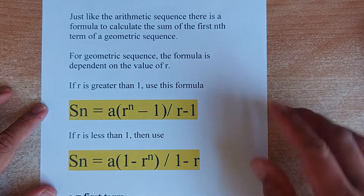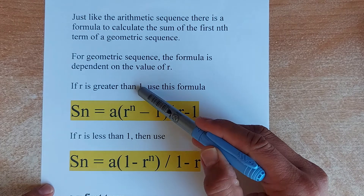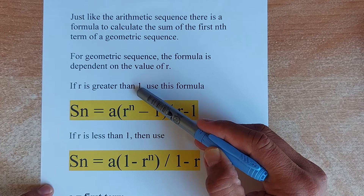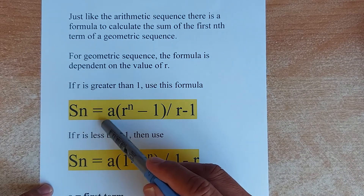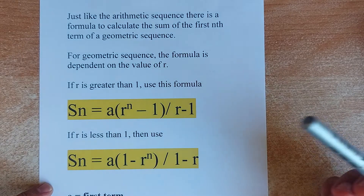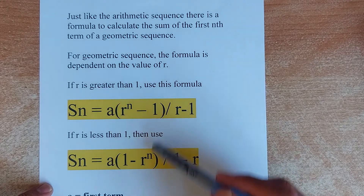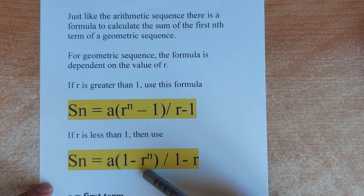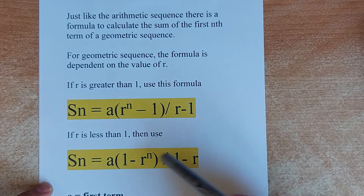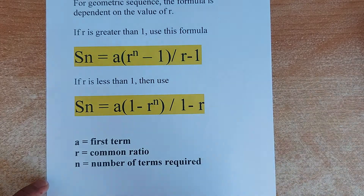Just like your AP, you have to find the sum of the first N terms. For the geometric sequence, the formula is dependent on the value of R. If R is more than 1 — for example, R is 2, 3, 4, 5, or 10 — the formula is: SN equals A times (R to the power N minus 1) divided by (R minus 1). However, if R is less than 1 — for example 0.5 or 0.9 — the formula is: SN equals A times (1 minus R to the power N) divided by (1 minus R). It's the same formula, just reshuffled. A is the first term, R is the common ratio, and N is the number of terms required.